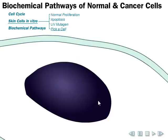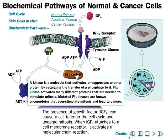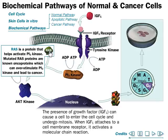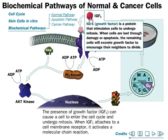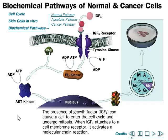Now let's look at the biochemical pathway of a normal cell. We have different proteins including tyrosine kinase, PI3 kinase, Ras proteins, and the IGF receptor protein, which receives IGF — insulin-like growth factor. The presence of this growth factor can cause the cell to enter the cell cycle and undergo mitosis. When IGF attaches to the cell membrane receptor, it activates a molecular chain reaction called signal transduction.